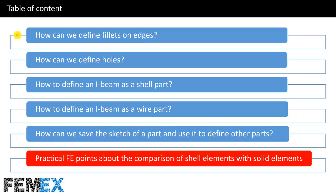This is the table of content. I will talk about how we can define fillets on edges, how we can define holes, how to define an I-beam as a shell part, how to define an I-beam as a wire part, how we can save the sketch of a part and use it to define other parts, and finally, practical FE points about the comparison of shell elements with solid elements.